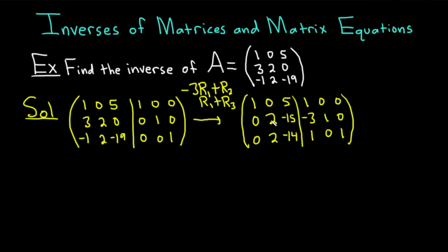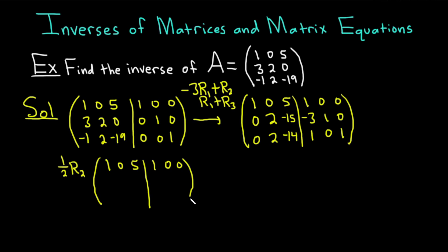Now we're going to make this 2 in the middle a 1 by multiplying one half times row 2. Keeping the first and third rows the same — 1, 0, 5 with 1, 0, 0 — multiplying everything in the second row by one half gives us 0, 1, negative 15 over 2, negative 3 over 2, 1 over 2, and 0. The last row is unchanged: 0, 2, negative 14, 1, 0, 1.